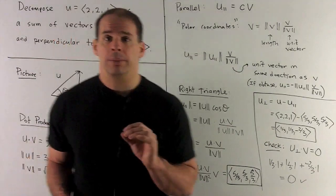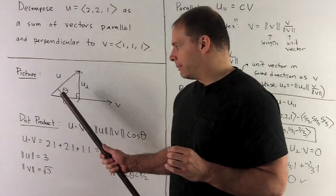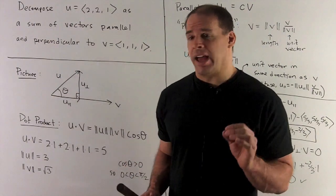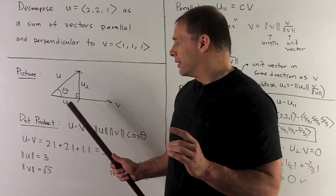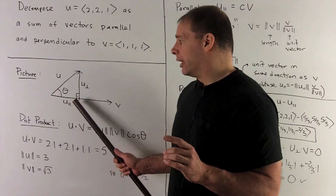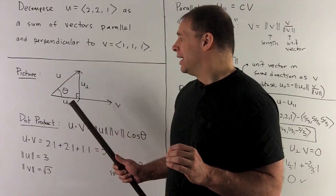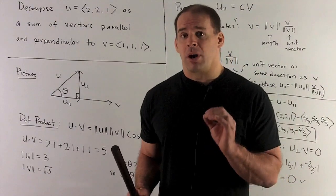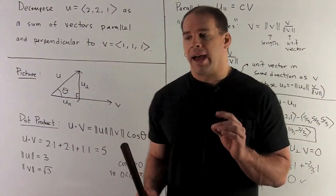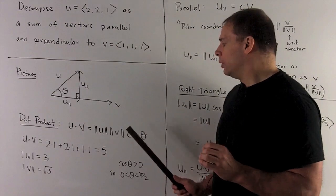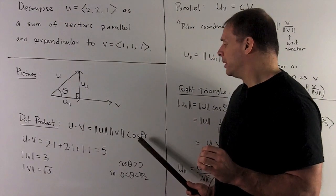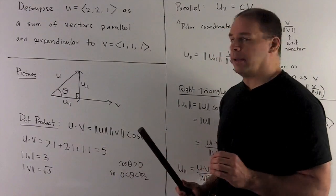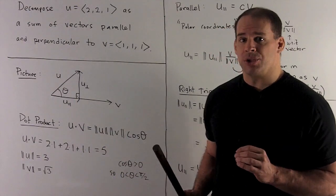To find the length of u parallel, we go to the right triangle. So what do we have here? I have my theta, u is going to be the hypotenuse, u parallel is going to be the adjacent leg. So the length of u parallel is the length of u times cosine of theta. Here's where the dot product comes in. We also have u dot v equals length of u, length of v, cosine theta. So cosine theta is u dot v over length u, length v. So we could sub out cosine theta.